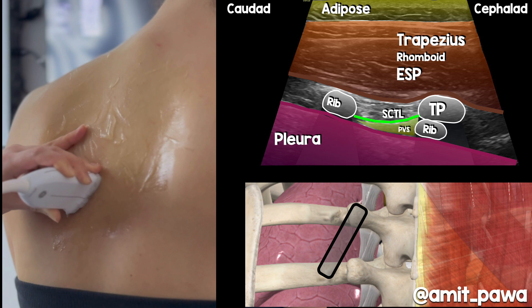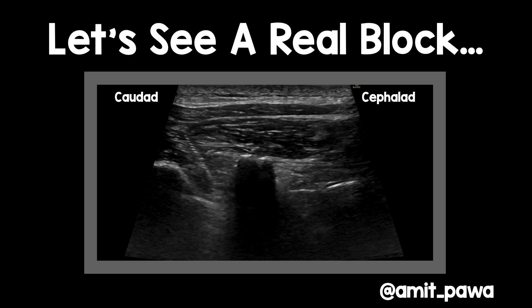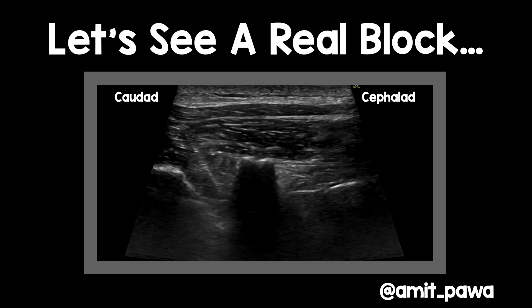We can now needle in-plane from cephalad to caudal and get into that space. Here's the needle coming in from cephalad to caudal, crossing the superior costo-transverse ligament and injecting local anaesthetic deep to it to get that lovely pleural drop. Here is a patient — the right-hand side of the screen is caudal, the left-hand side is cephalad — and this needle is coming in-plane. You'll see that initial seeker solution demonstrating the needle tip has just crossed the superior costo-transverse ligament.